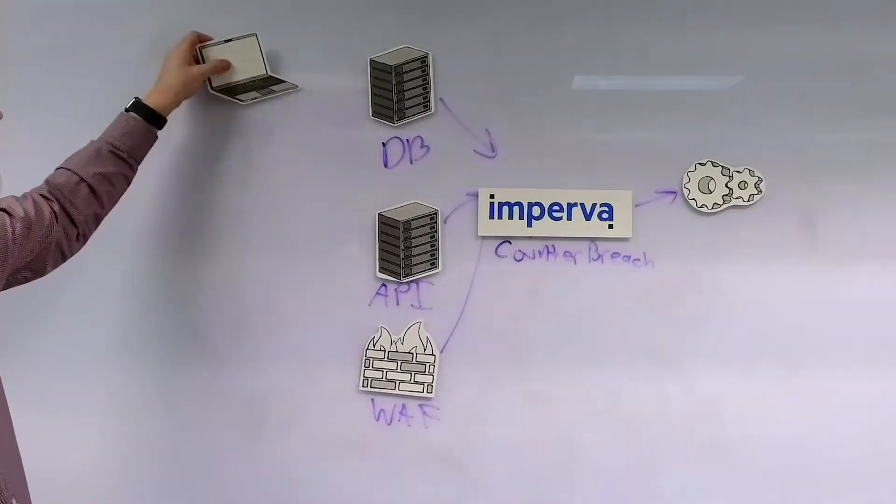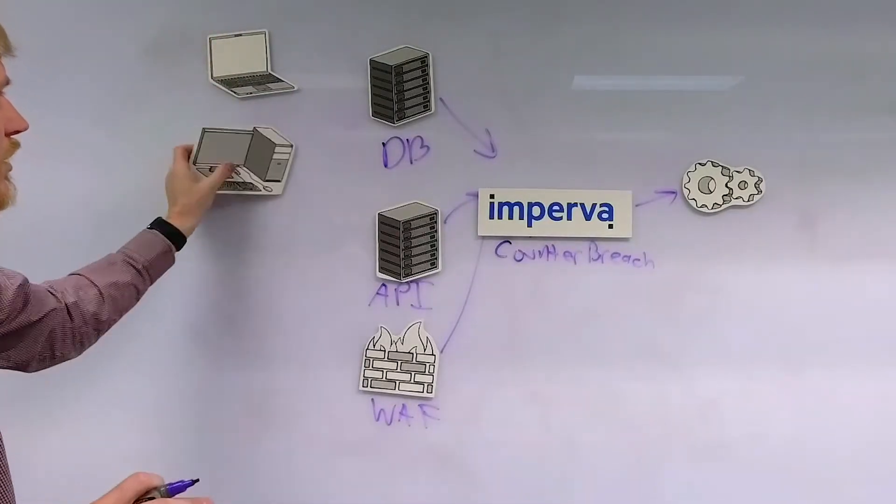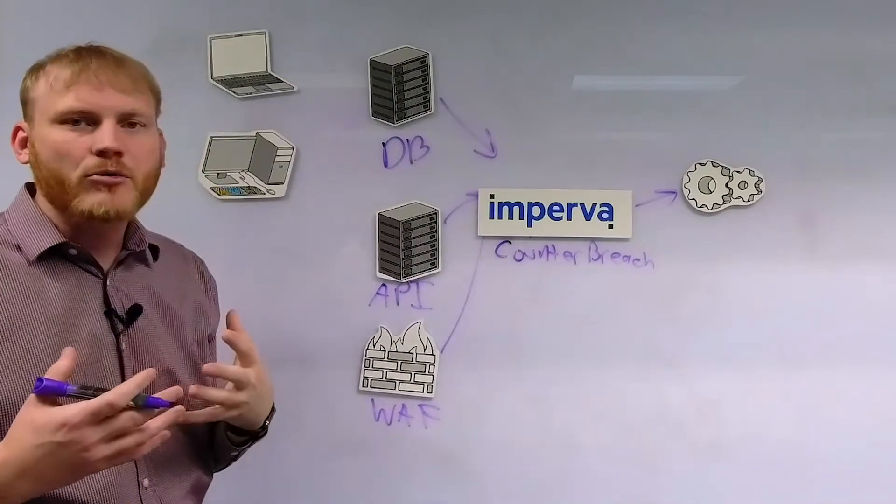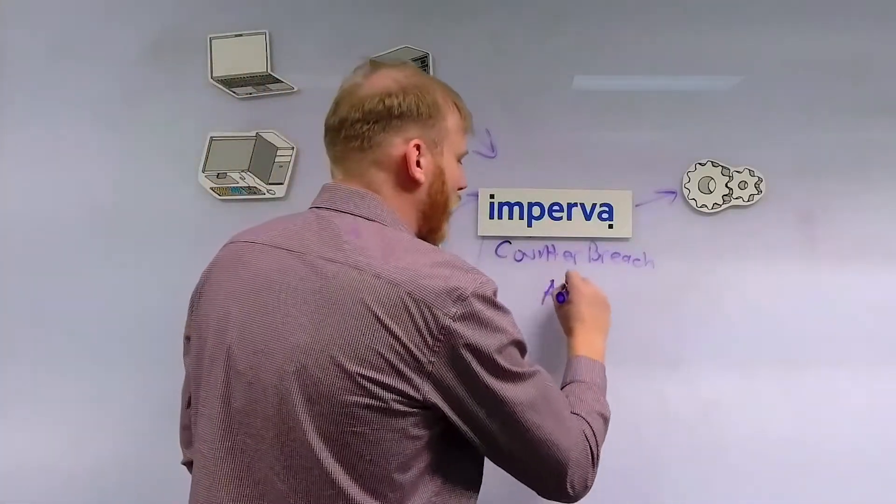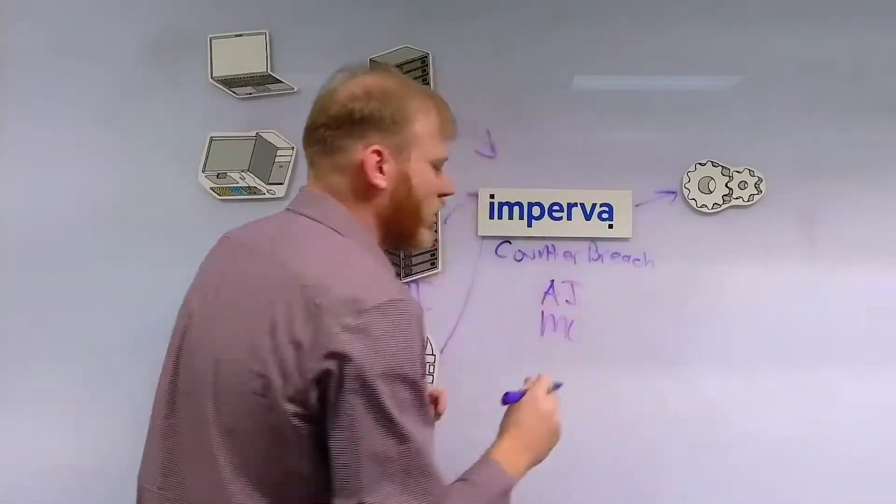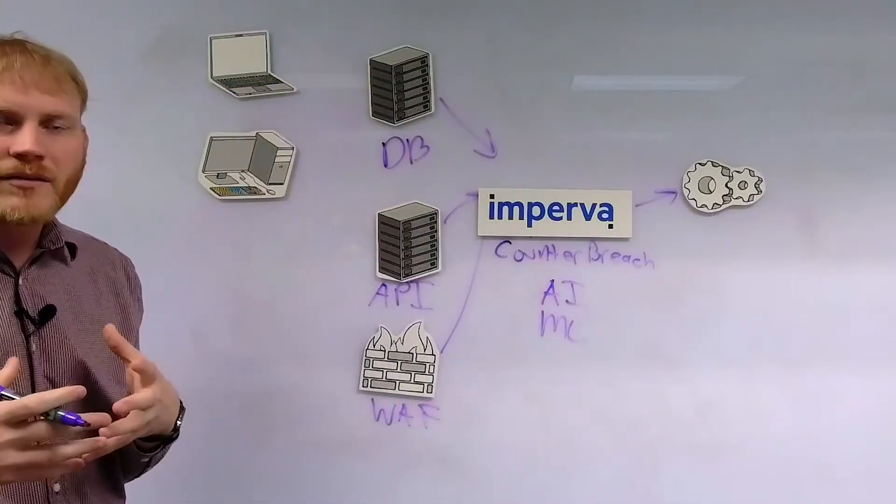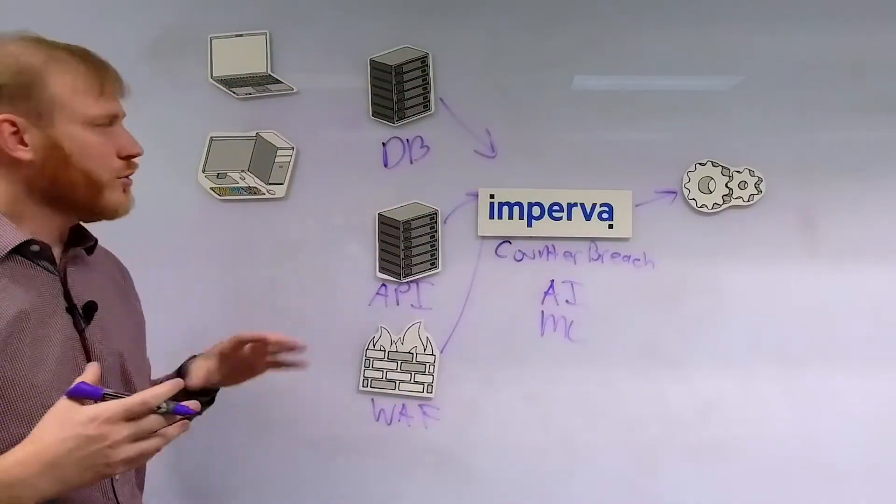A couple of examples of that would be something like this. We have the ability to understand peer group analysis, doing things like artificial intelligence and machine learning. We can understand who is accessing this information and what they're doing with it.